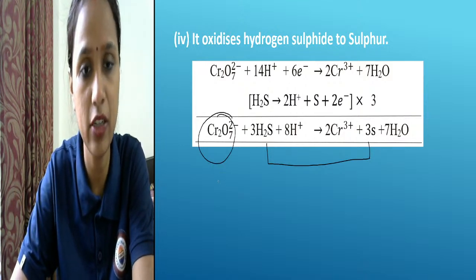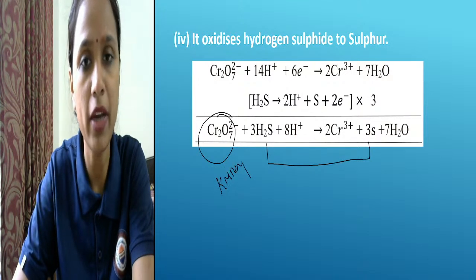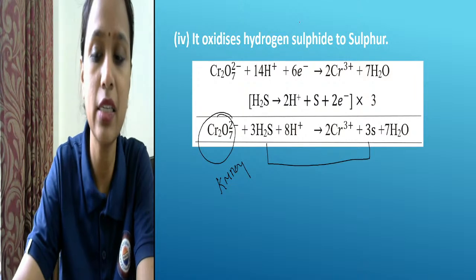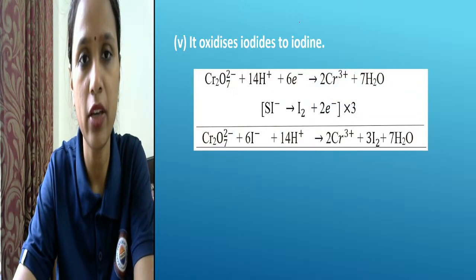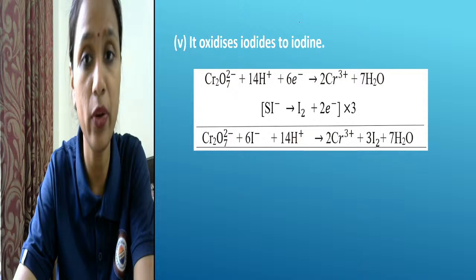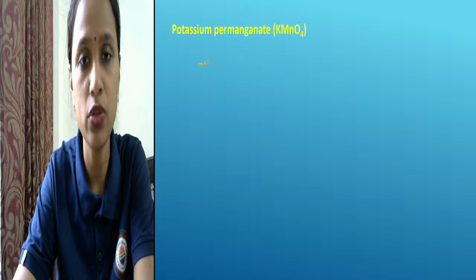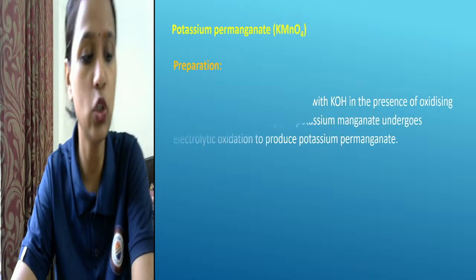Then we have stannous conversion, sulfur dioxide to sulfate, how to convert hydrogen sulfide to sulfur. The whole reaction is the same as for dichromate — instead of dichromate they will use potassium permanganate. For example, potassium iodide to iodine — we will see the same reaction using potassium permanganate.